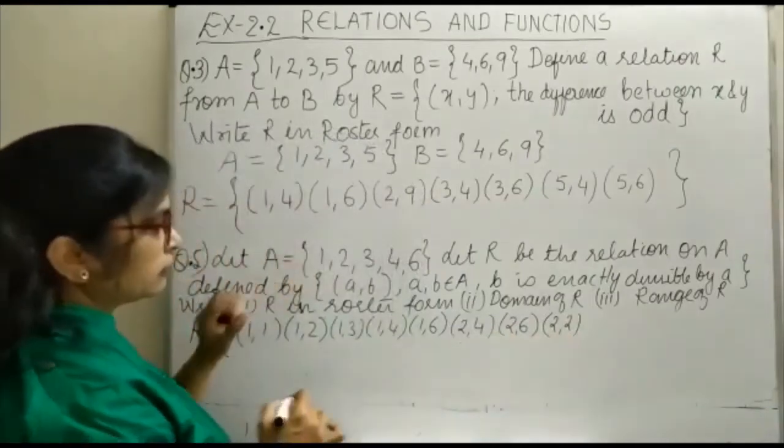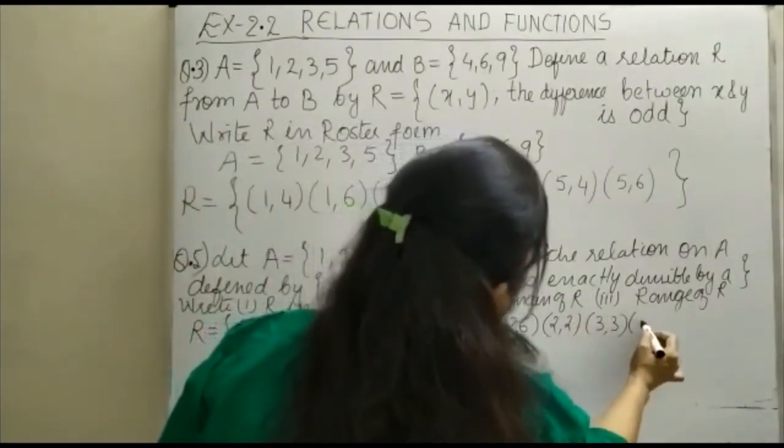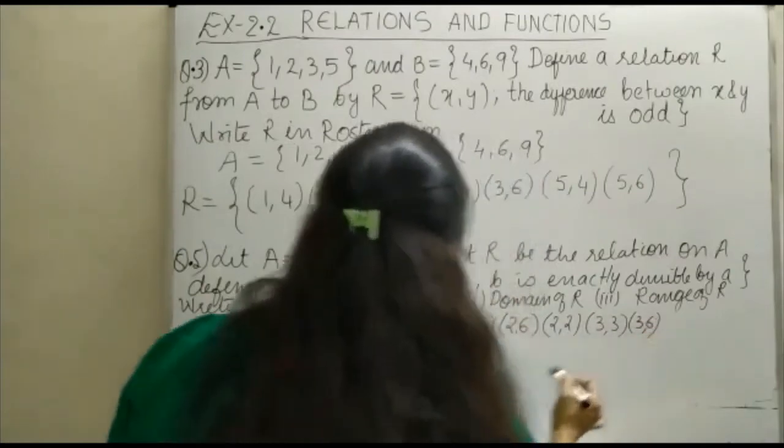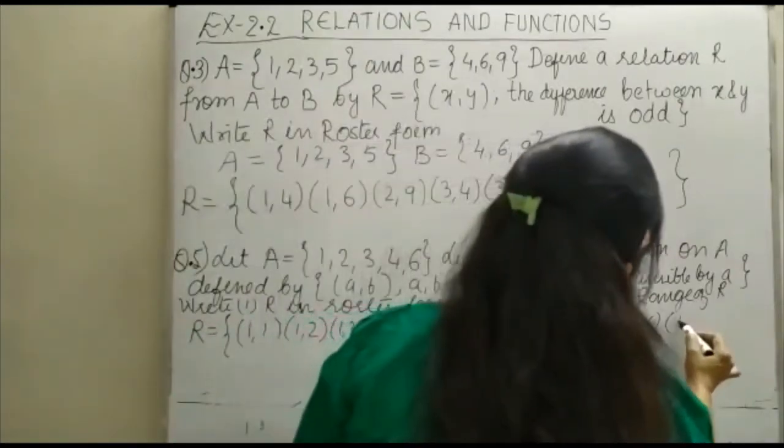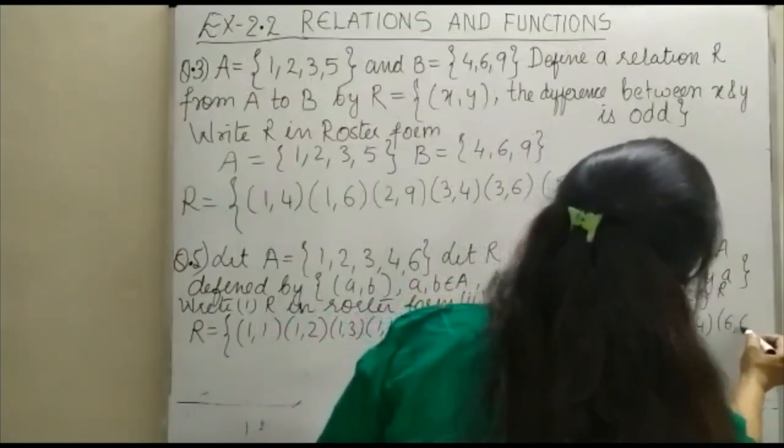With 3, same thing: (3,3) and (3,6). With 4, you will get (4,4), and with 6 you will get (6,6).